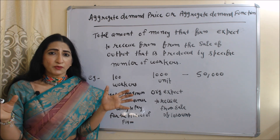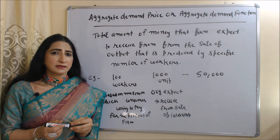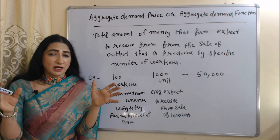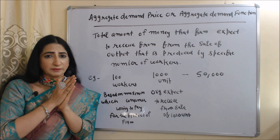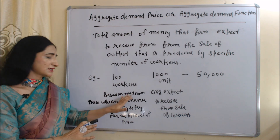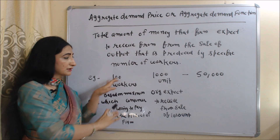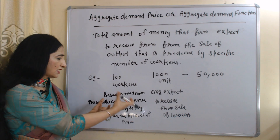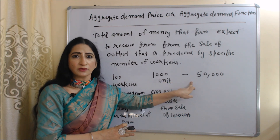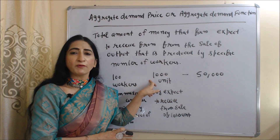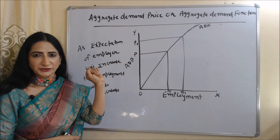Aggregate demand price is the total amount of money that a firm expects to receive from the sale of output produced by a specific number of workers. This expected amount depends on the maximum price consumers are willing to pay. For example, if there are 100 workers producing 1,000 units and the firm expects to receive 50,000 rupees from the sale of those 1,000 units, then that 50,000 rupees is called the aggregate demand price.